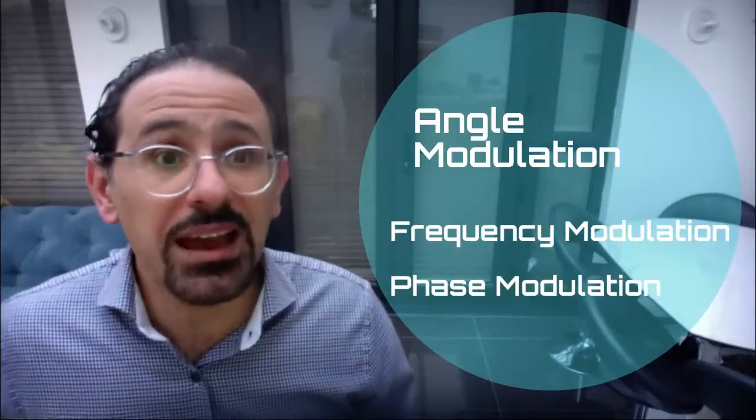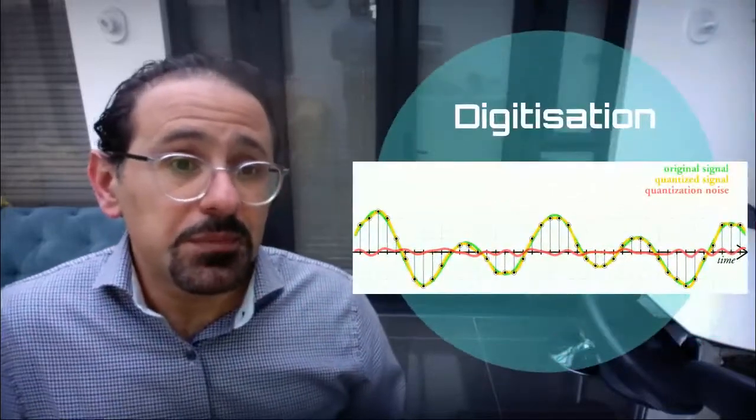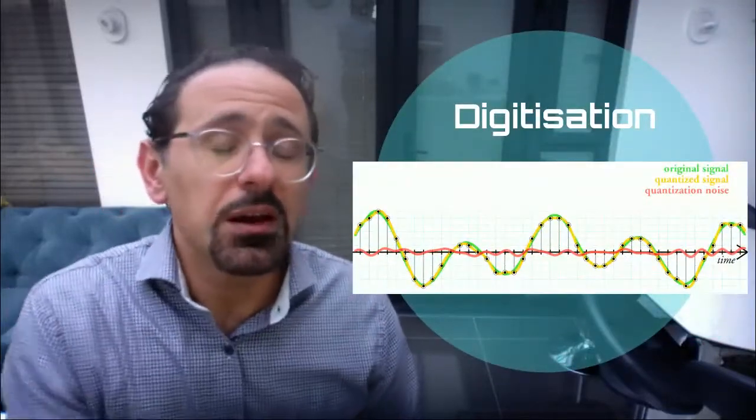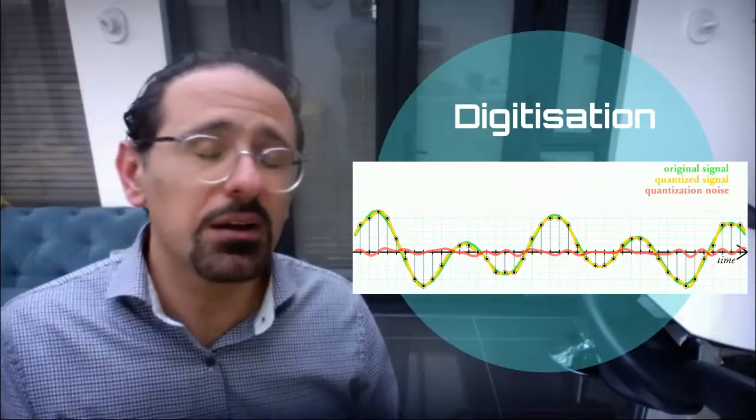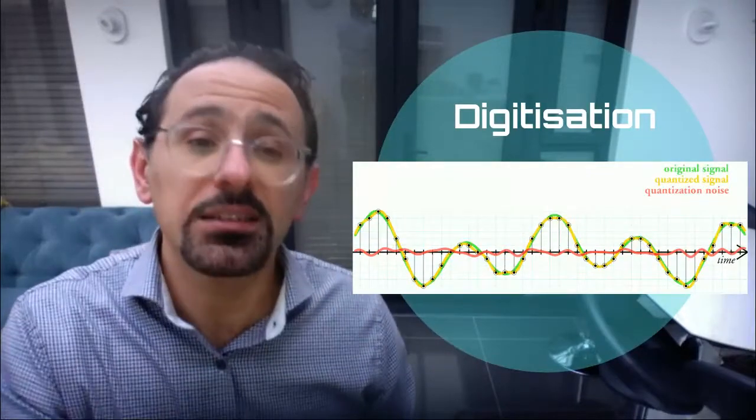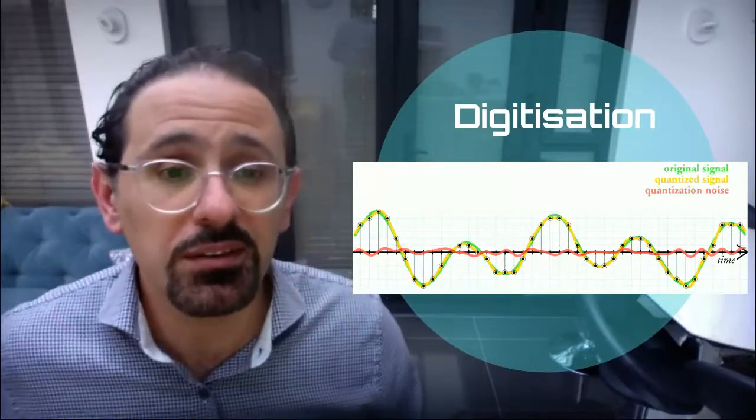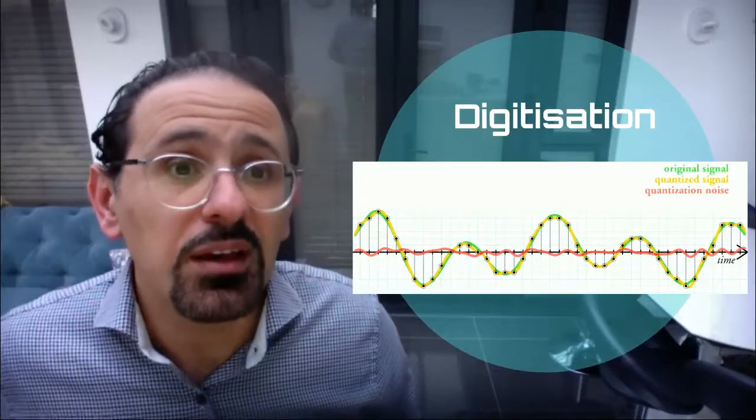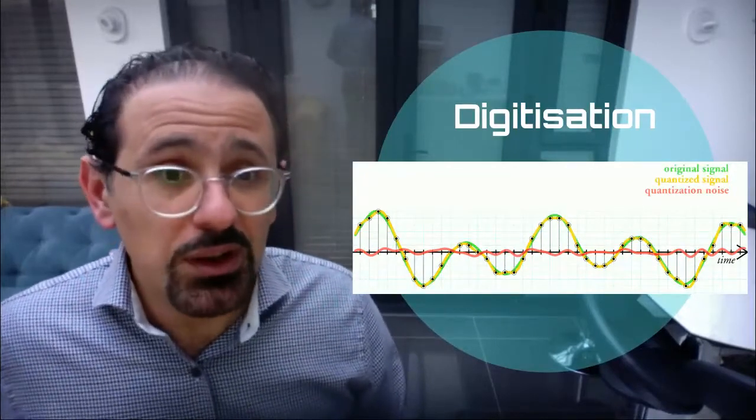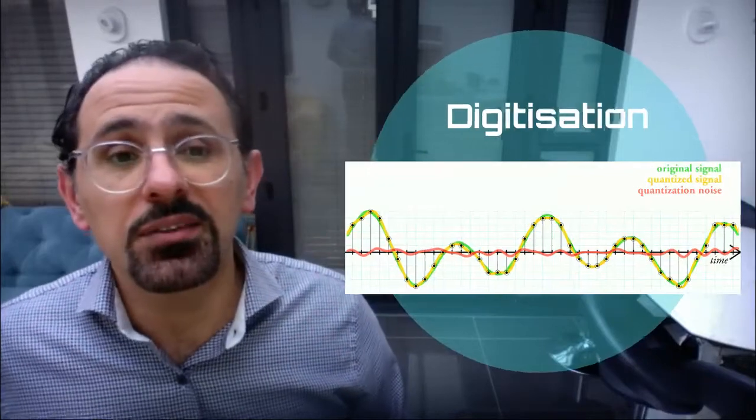Then we're going to talk about noise. Then we're going to talk about digitization, which is the bridge between analog communications and digital communications. So sampling and quantization. So you've come across this several times before, but we'll look at it in a little bit more detail in this module.